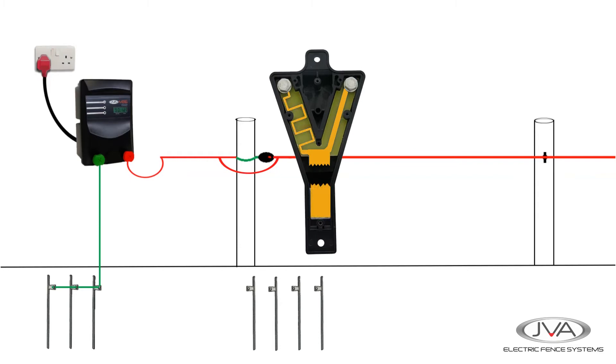Below the bend is an adjustable spark gap. The straight thicker path offers a more favourable, less resistant route for lightning to take, jumping the spark gap en route to the ground.